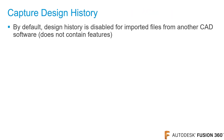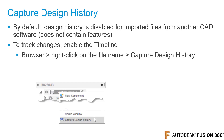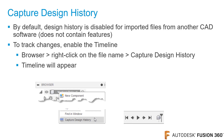Note that imported CAD files do not contain features and the file's design history is disabled. To capture design history and enable the timeline, go in the browser and right-click on the top level file name. From the menu, click capture design history. The timeline will appear at the bottom of the canvas and you can add features as needed.